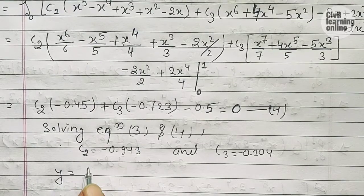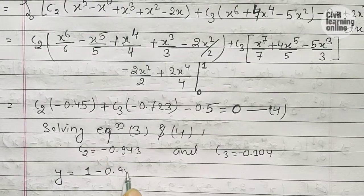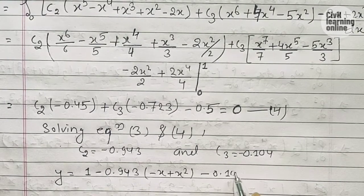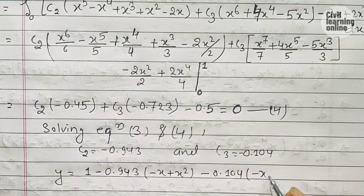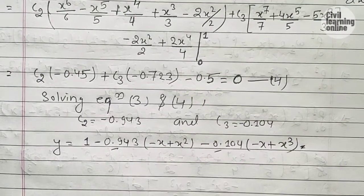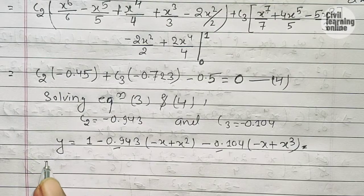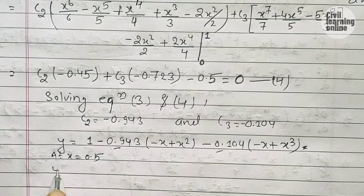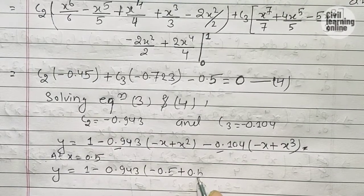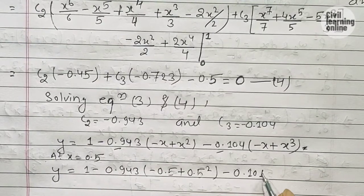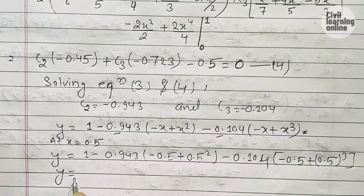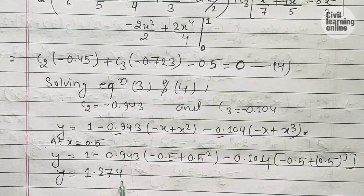Substituting c₂ = -0.943 and c₃ = -0.104 back into equation 2: y = 1 - 0.943(-x + x²) - 0.104(-x + x³). Now putting x = 0.5: y = 1 - 0.943(-0.5 + 0.5²) - 0.104(-0.5 + 0.5³). Evaluating this gives y = 1.274.